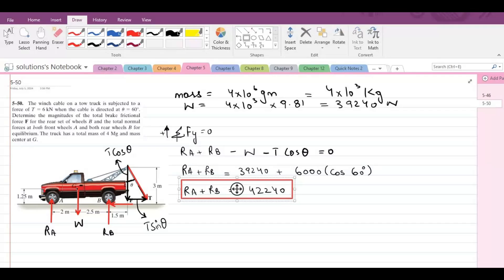Now we have two unknowns and one equation, so we need at least another equation to find the values of RA and RB.